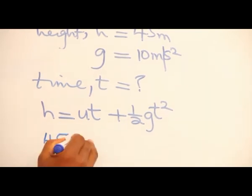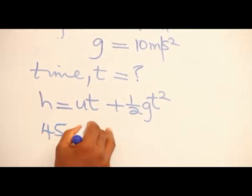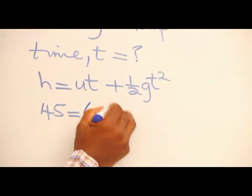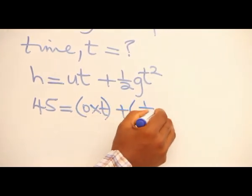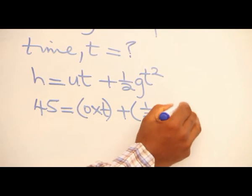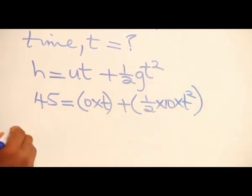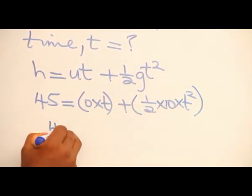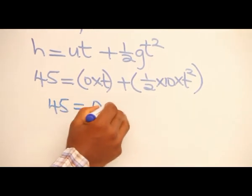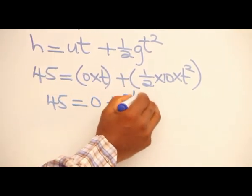Substituting the values: h = 45, so 45 = (0×t) + (½×10×t²). This simplifies to 45 = 0 + 5t².